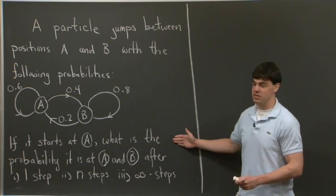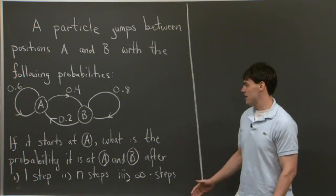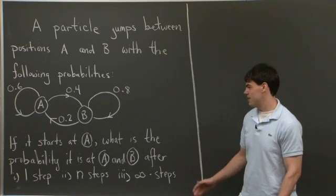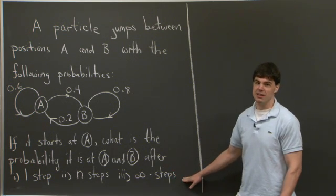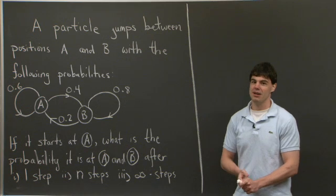we'd like to know the evolution of the probability of this particle over a long period of time. So specifically, the problem we're interested in today is if we have a particle and we know that it starts at position A, what is the probability that it is at position A and position B after one step, after n steps, and then finally after an infinite number of steps. So I'll let you think about this problem for a moment, and I'll be back.